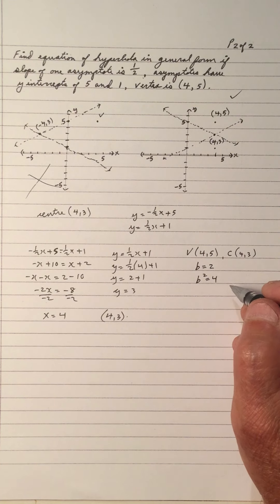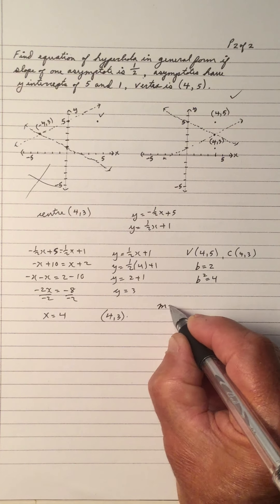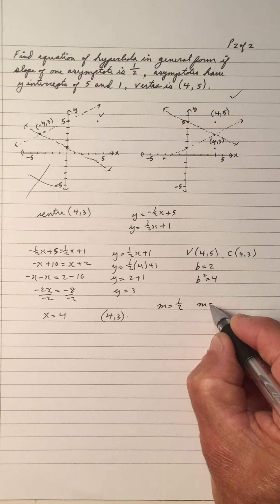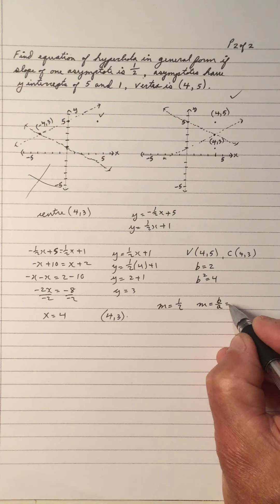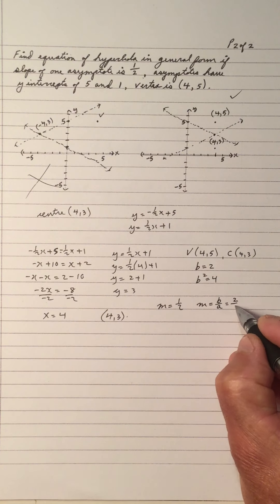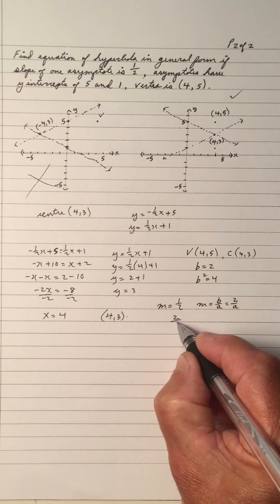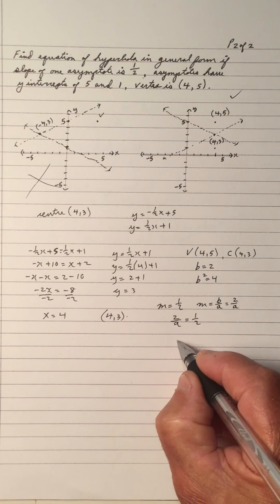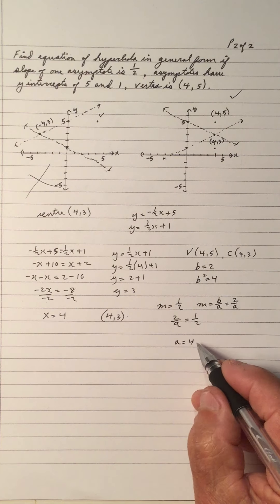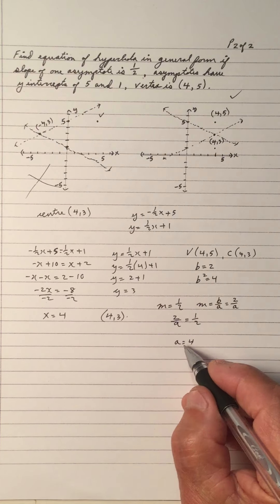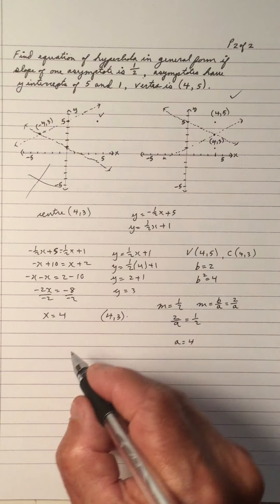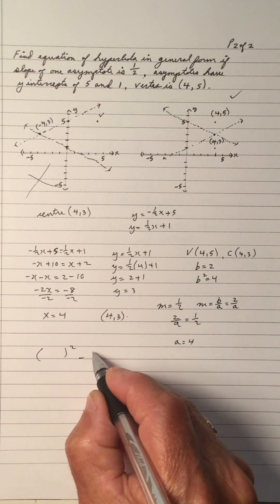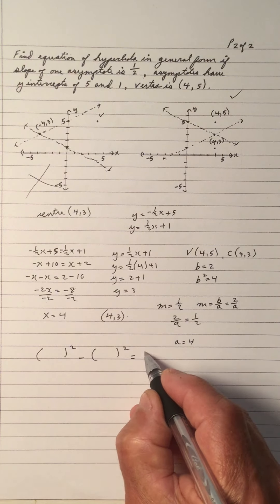So how do we get the a? Well, we know that the slope is a half. And we know the slope is the b over the a. So the b is 2, so that's 2 over a. So that means that 2 over a must be 1 half. Cross multiply, 1 times a is a, 2 times 2 is 4, so a is 4. So we've got b is 2, a is 4. And notice this is a vertical, so that means the y is first. And the x is second, equal to 1.